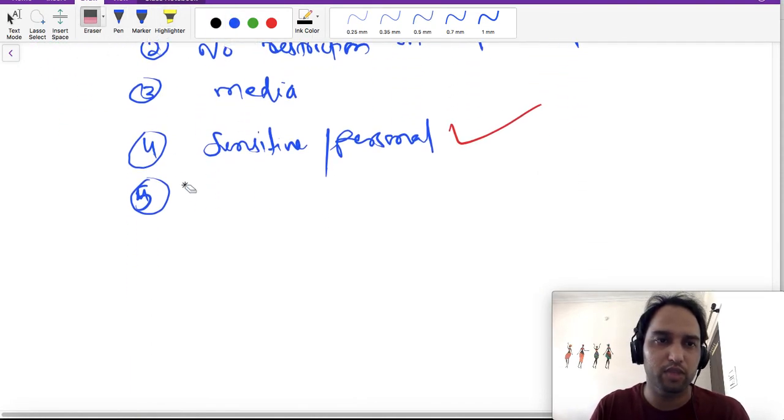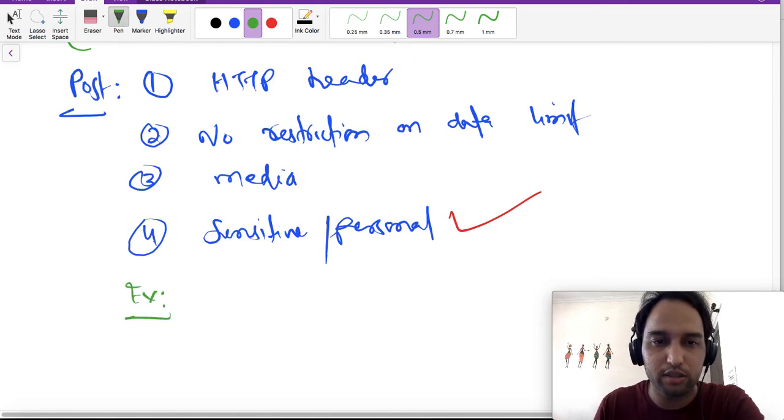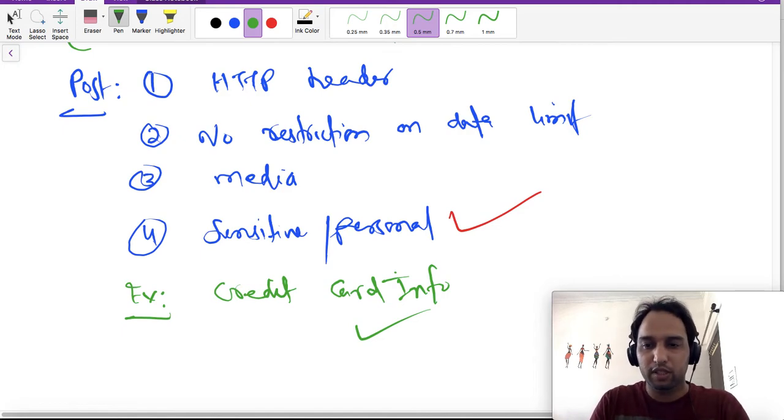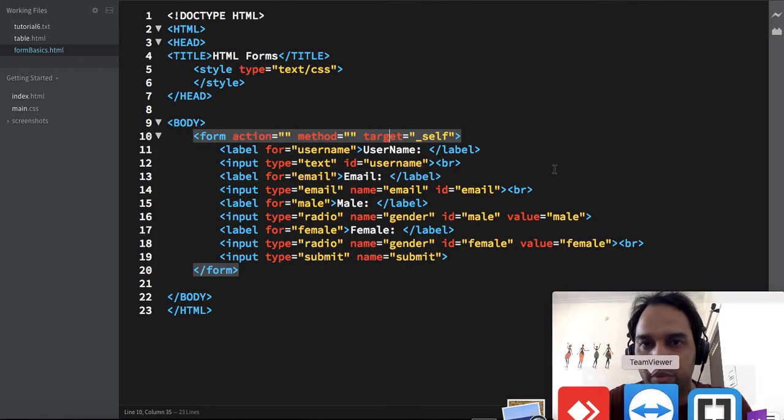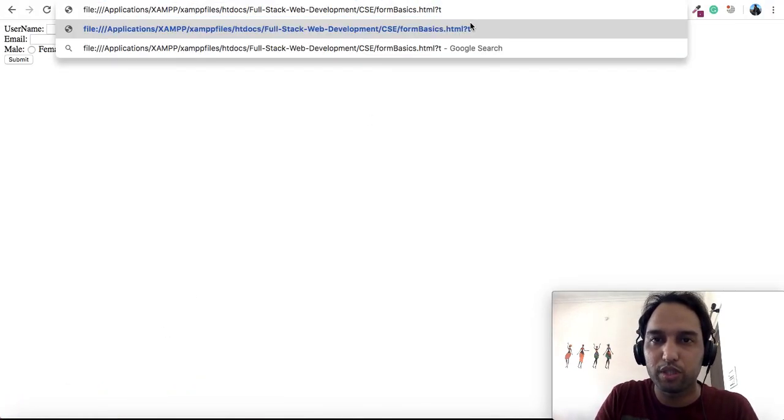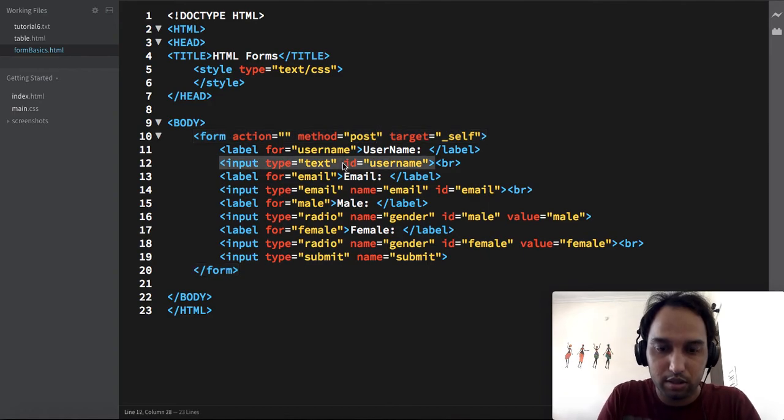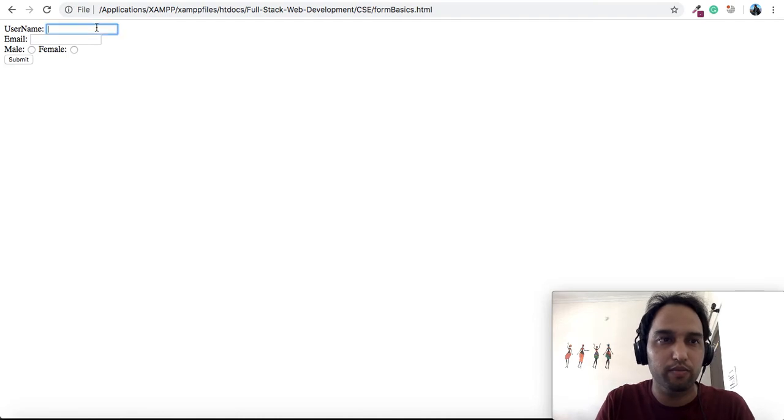This is it for the difference. If I remember anything else later, I will just update it, but I think this is it. Example we have already seen like credit card information. So now let's see the way POST sends the data. Come here, make it POST, and now remove this. One more thing I need to change is I have removed the name from here.